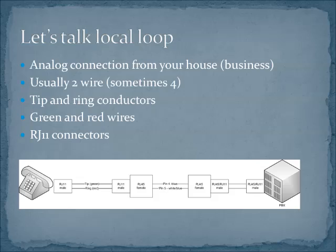A couple of features about the local loop: it is analog. These are almost always small connections. If you have a larger business, it's not likely that you'll have an analog line coming in, although it's possible you might have several. So we're going to talk mostly about houses. Very typically, these start with two-wire connections — sometimes there's four — and these are the tip and ring wires. The two wires are tip and ring.